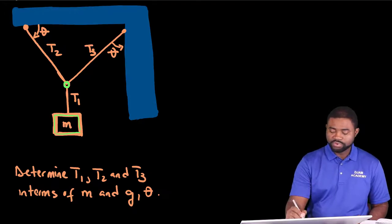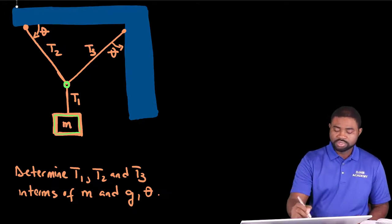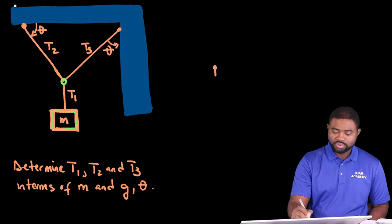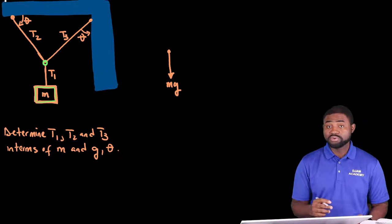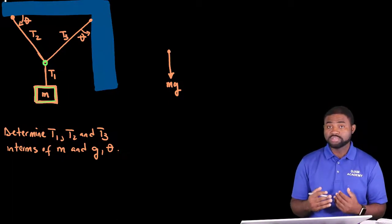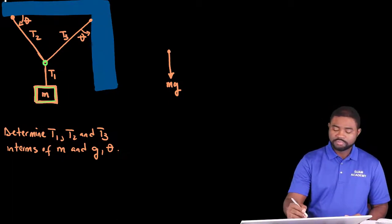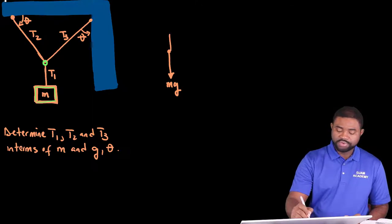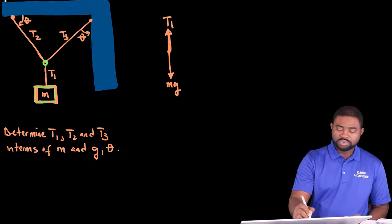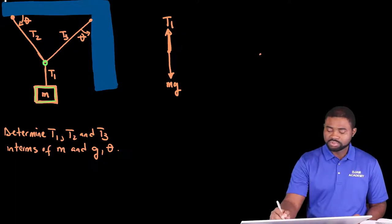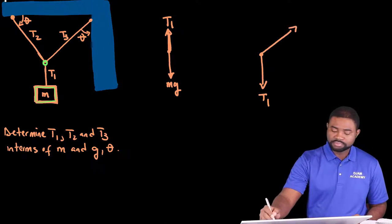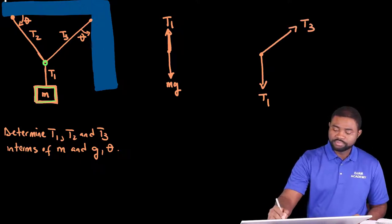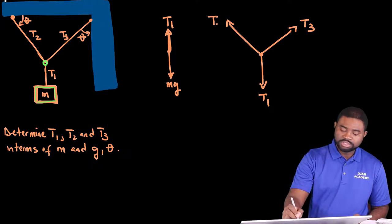So, if we do the free body diagram on the box, the weight obviously acts vertically downwards. As a matter of fact, the weight always acts vertically downwards. You have here T1. If we want to do the free body diagram on the knot, this is T1, T3, T2.